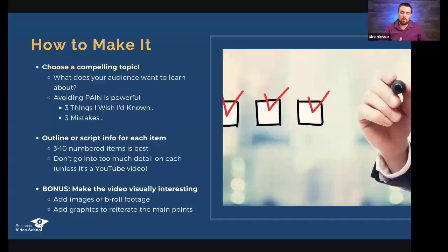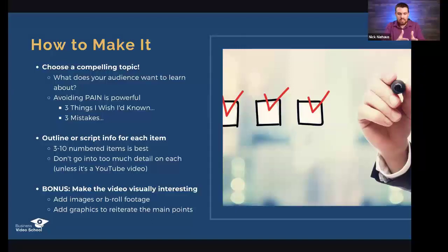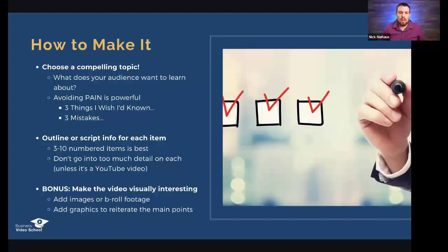Two formats I like a lot that are really about avoiding pain: 'Three things I wish I had known' — that implies you made mistakes and wish you'd known these things before going down a path. Another is 'Three mistakes I made when buying my first house' — give those three mistakes and ideas on how to avoid them. You don't need a script; an outline is plenty.